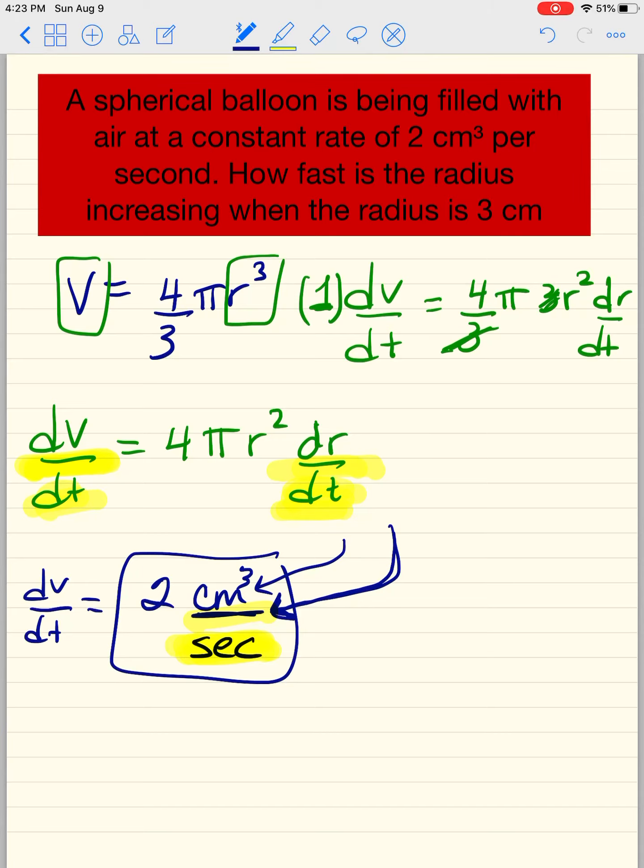Now, how fast is the radius increasing when the radius is 3 centimeters? So they're telling you what this radius is. So r is 3 centimeters. How fast is the radius increasing? Well, that means we are looking for dr/dt. Why?